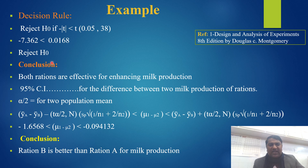The conclusion is that both rations are effective for enhancing milk production. However, to decide which ration is best, we apply another formula using alpha divided by two for two population means. After applying this formula, the value comes out to minus 1.6568 and 0.094132. Finally, it is concluded that Ration B is better than Ration A for milk production.